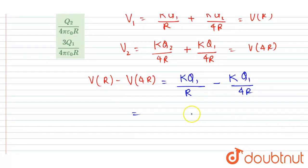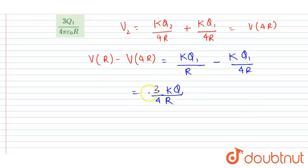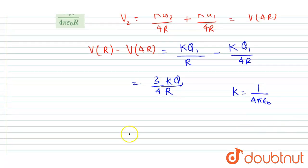So I will get here the potential difference will be equal to 3 by 4 k q1 by r, right? So now if I write k is equal to 1 by 4π epsilon naught, right?